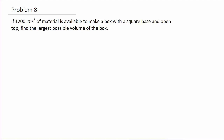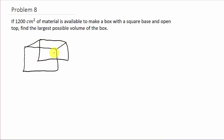We want to write down the information they give us and then write down what we want to maximize or minimize. In this case we want to maximize because we want the largest possible volume. Let's make a picture of the box. We'll label the base x and x — they're the same because it's a square base — and then label the height h.